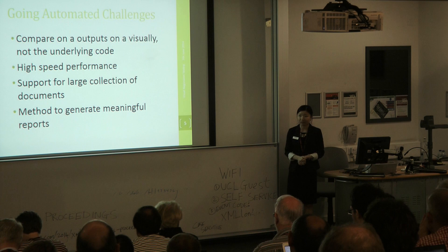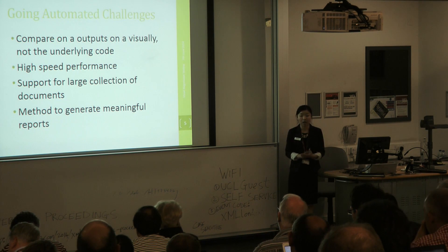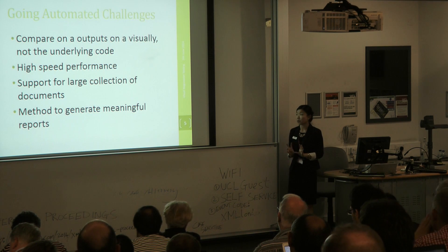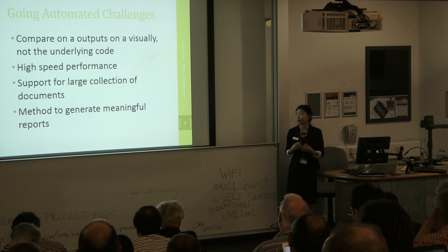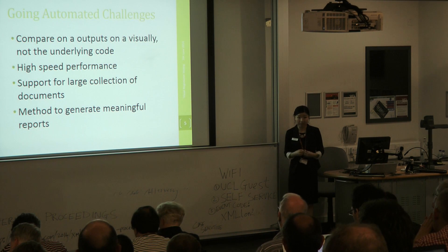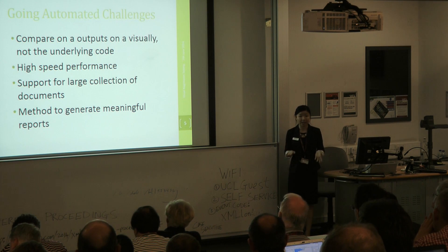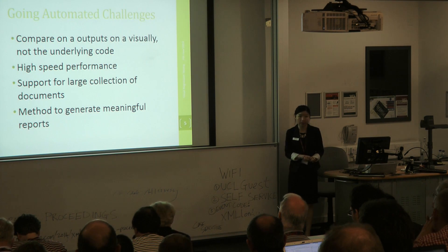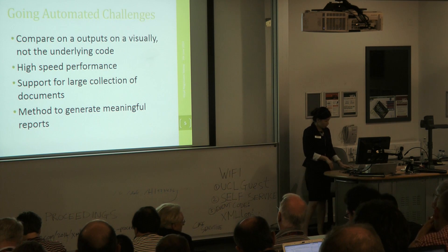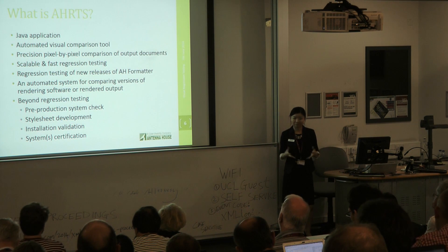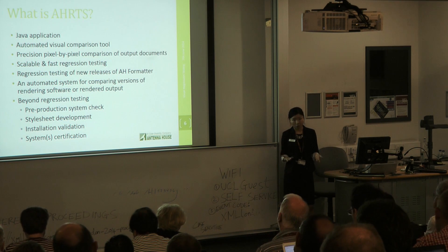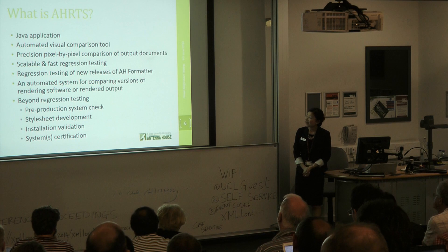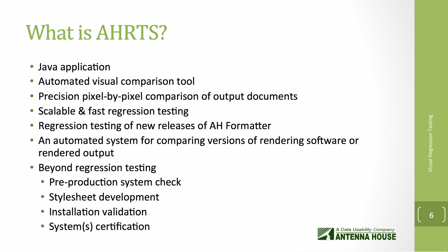There are many challenges that we found. We really wanted a tool that would be able to compare the PDFs on a visual level as opposed to the underlying code. We wanted something that was fast and very robust and could handle our test suite of 10,000 pages without any errors. We also wanted a method to generate very meaningful reports that could highlight the differences. We tested out many different solutions, but none of them met all of our requirements. So we decided to just develop our own automated regression testing system, which we call Antenna House Regression Testing System — AHRTS for short.